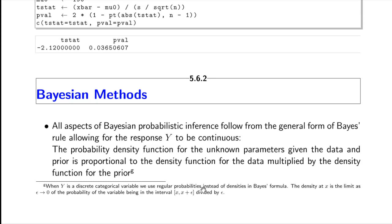All Bayesian inference is based on Bayes' formula. The probability function for unknown parameters such as mu and sigma, given the data and the prior, is proportional to the density function for the data — assuming a normal distribution for now — multiplied by the density function for the prior. The only thing that makes Bayes complicated is making that product integrate to one, requiring the denominator of Bayes' formula. That denominator is often fairly hard to calculate, but as we'll mention shortly, you don't always need to.